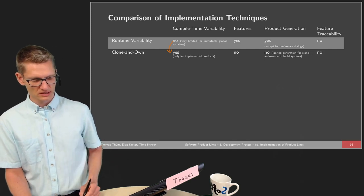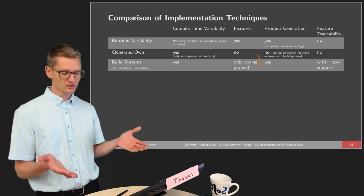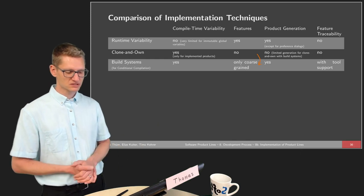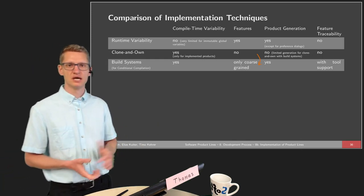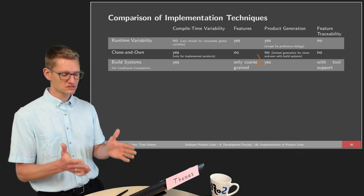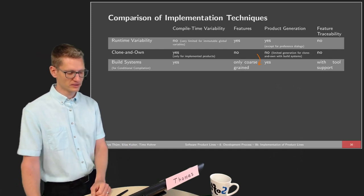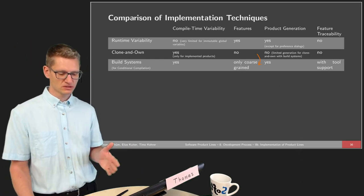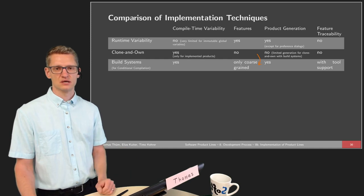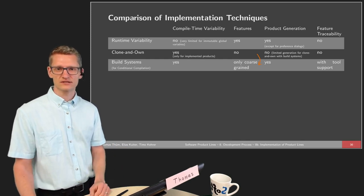Moving to more product-line-oriented techniques: build systems provide compile-time variability and can implement features, but only coarse-grained ones since composition is at the file level. We have automated generation based on build systems with free feature selection, and feature traceability is possible in a limited fashion with some tool support. Preprocessors improve over build systems by supporting fine-grained variability, though not all possible variability — they cannot handle whole libraries or folders. These two techniques are often combined in practice; for example, the Linux kernel uses both build systems and preprocessors together for conditional compilation.